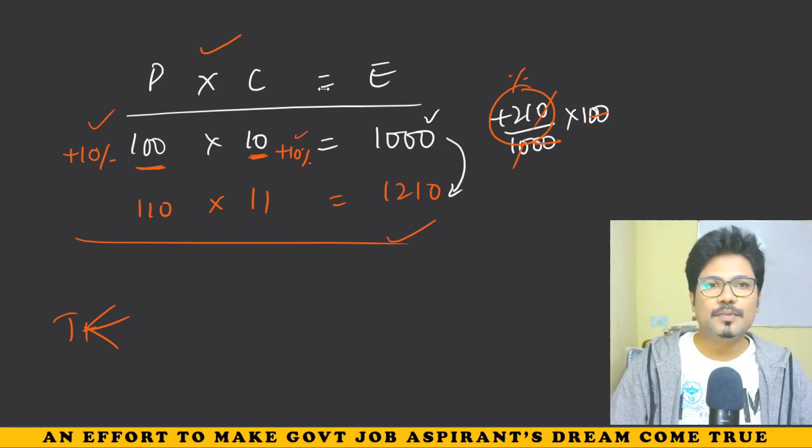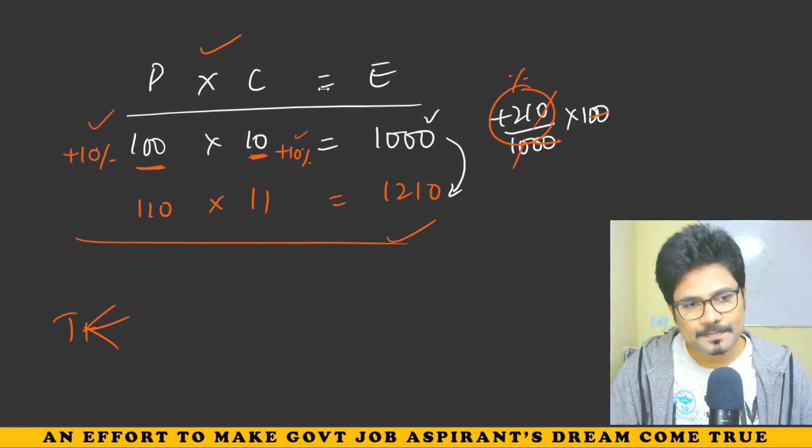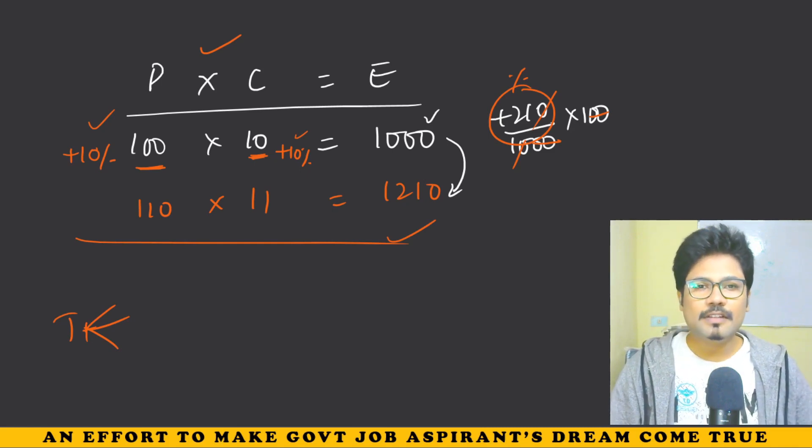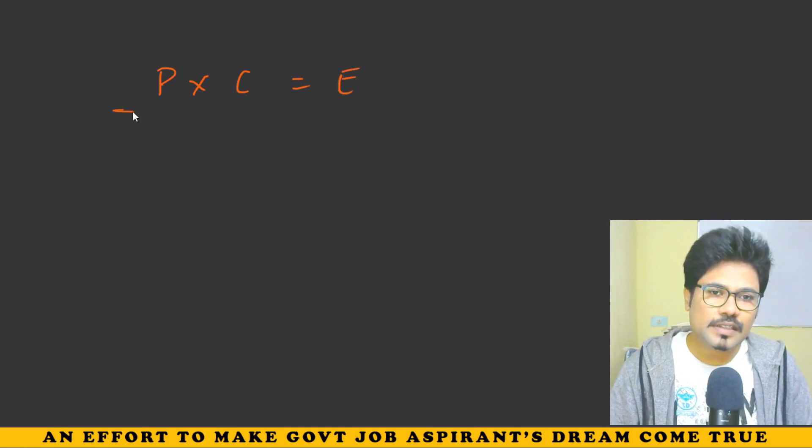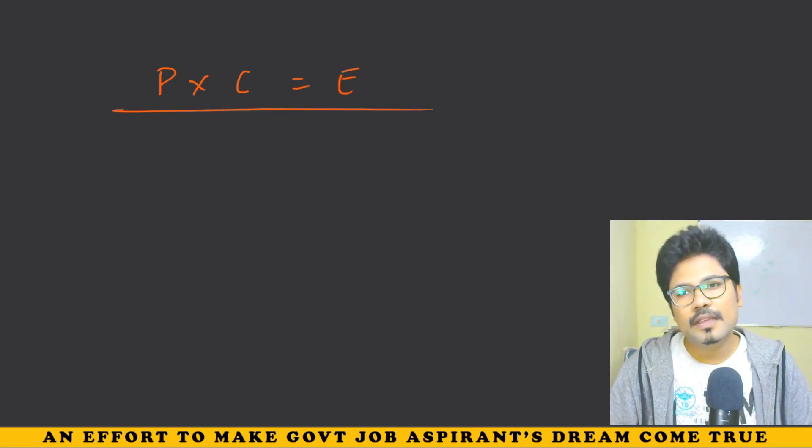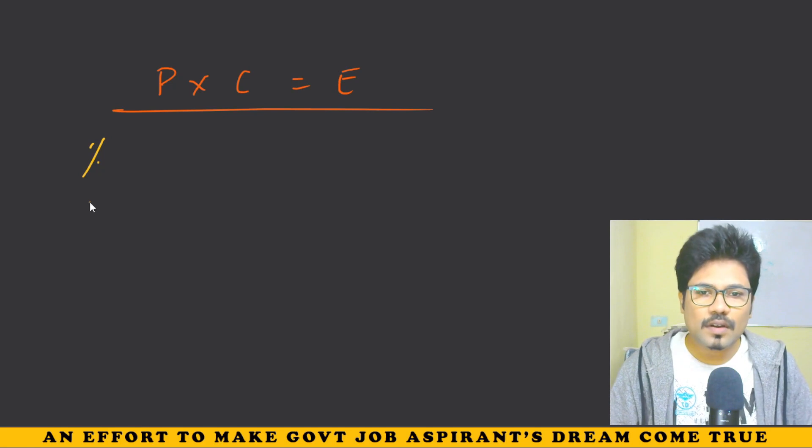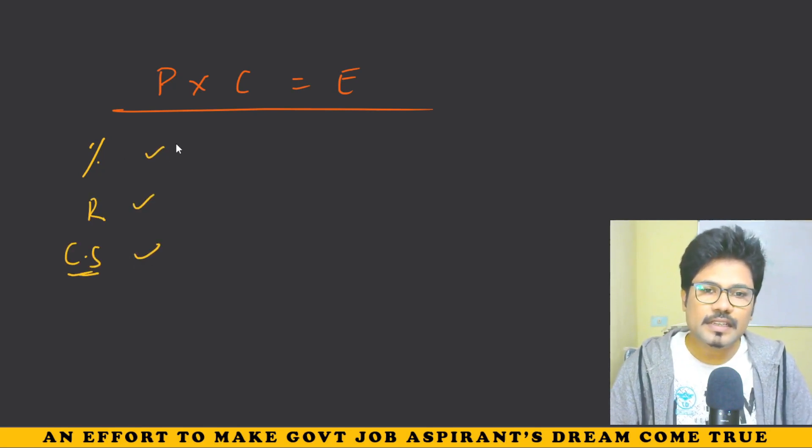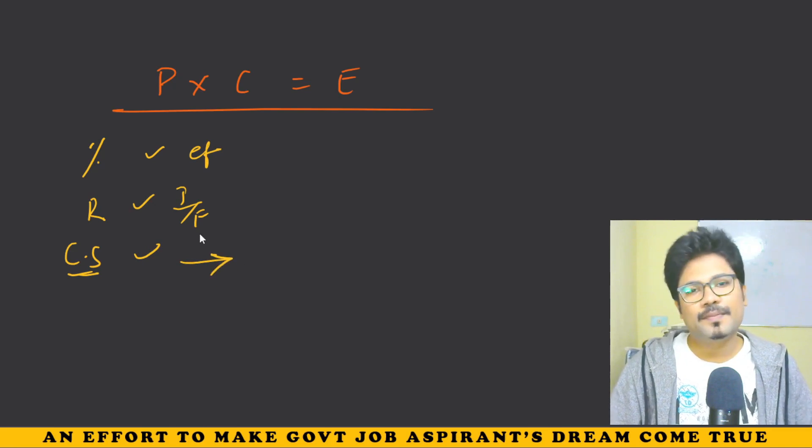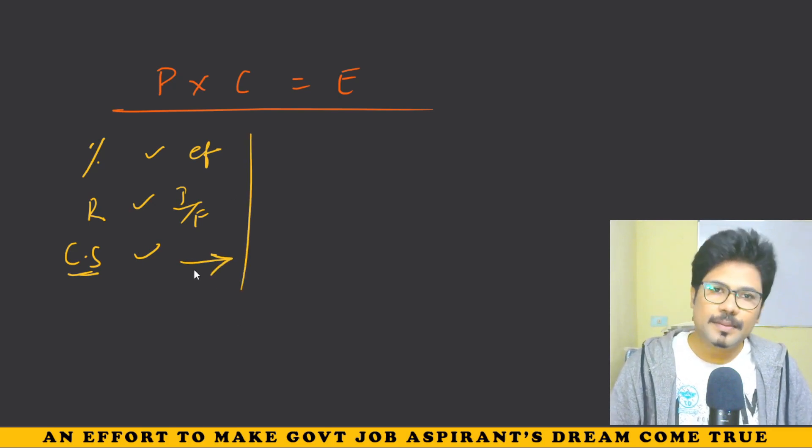But one thing is for sure, for P into C is equal to E, you can use percentage method, or ratio method, or common sense method. These three will suffice: effective percentage, ratio using initial by final, and common sense. You can do it as you want. These are the three methods.